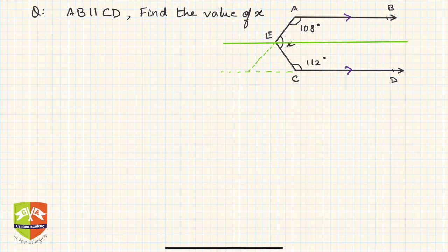Why? Because now the angle x which I have to find out is now the sum of two angles. If you see, this angle is, let's say, y, and this angle is z. So can I not say that x is equal to y plus z?